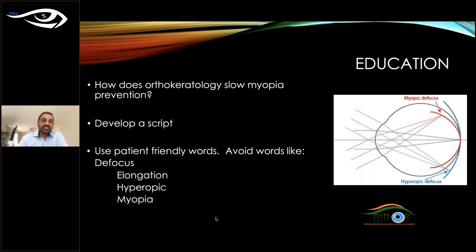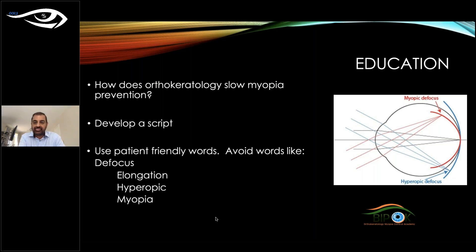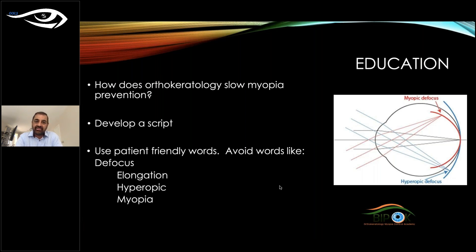Develop a script and use patient-friendly words. Avoid terms like defocus, elongation, hyperopic defocus, or myopic defocus. I simply draw a picture showing the curvature of the cornea and lens — showing how when they match, light rays focus correctly. I explain that the cornea changes shape so the central ray and peripheral rays all focus on the retina. Simplistic language makes it easier for a patient to understand, and if they understand they will go for it.